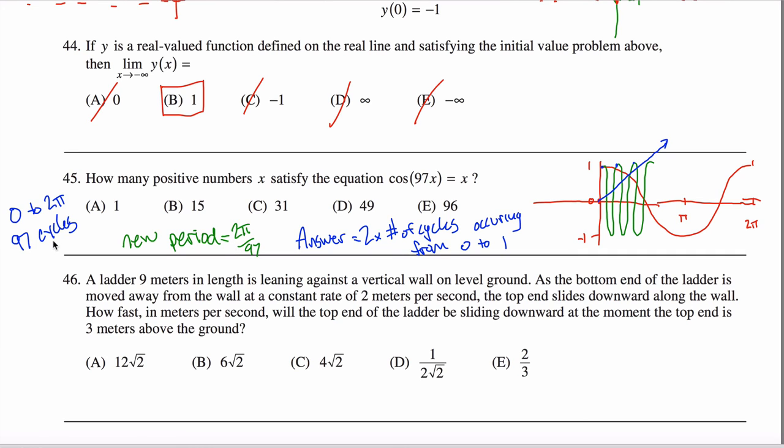But I don't want to know from zero to two pi, there's 97 cycles. But really, I only want from zero to one. Well, two pi is six-ish. So if from zero to six-ish, there's 97 cycles, then from zero to one, there's going to be roughly 97 divided by six cycles.